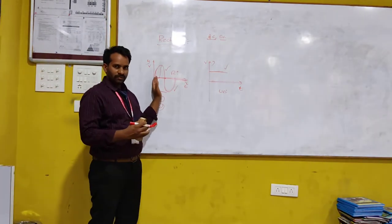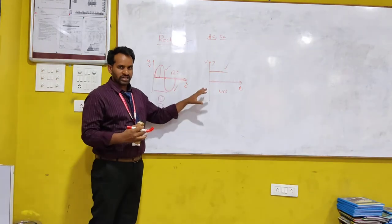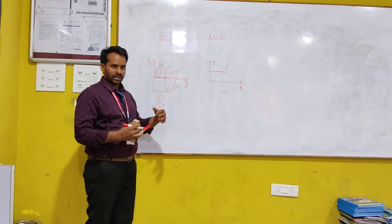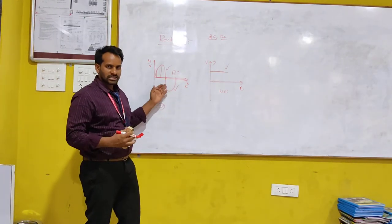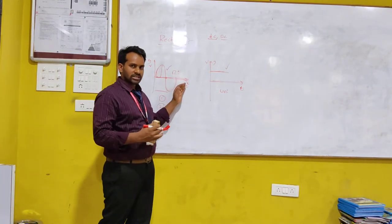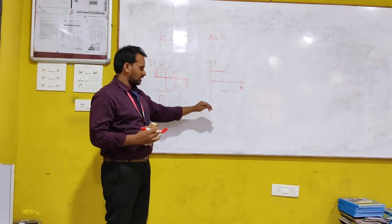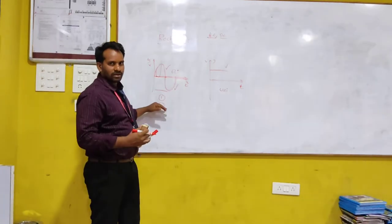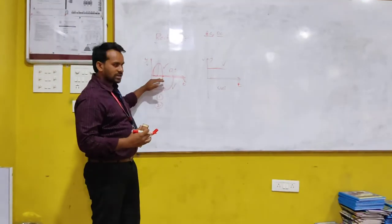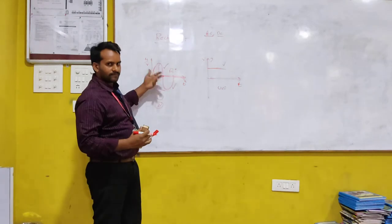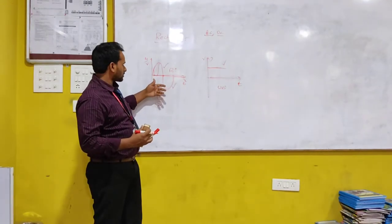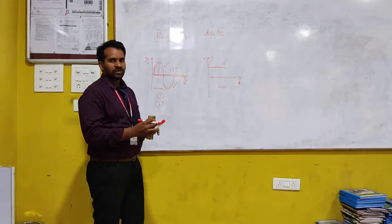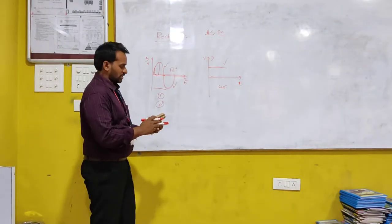So whether it is bidirectional or unidirectional, whether it is varying or not varying — AC signal is a bidirectional signal and DC is a unidirectional signal. Whereas AC signal voltage is varying and DC signal voltage is constant. Just keep that in mind.